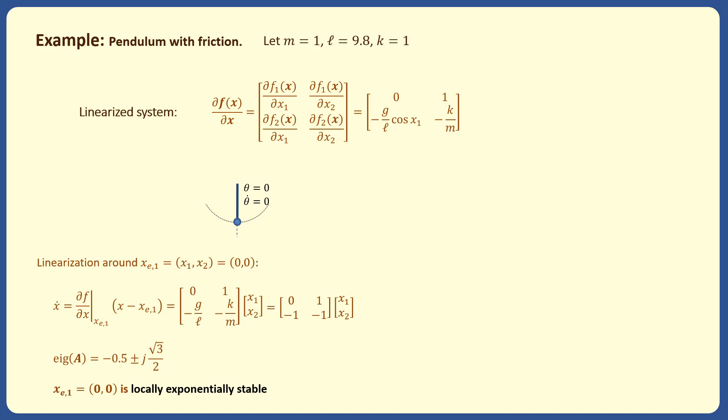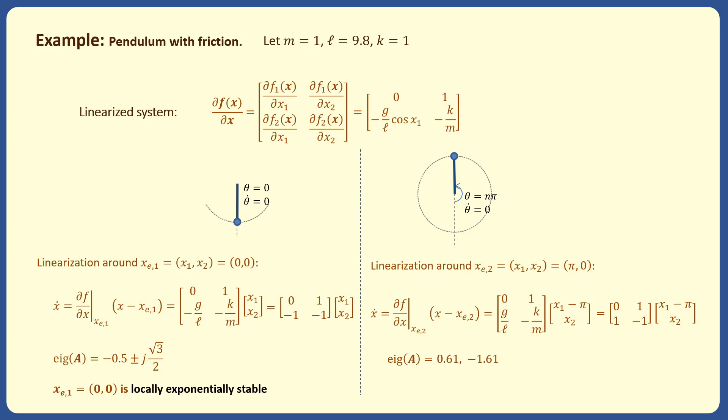But if we linearize the system around the equilibrium at x1 equals pi and x2 equals zero, then the matrix A has a positive and a negative eigenvalue. Therefore, this equilibrium point is unstable.